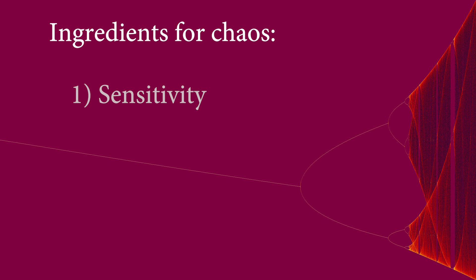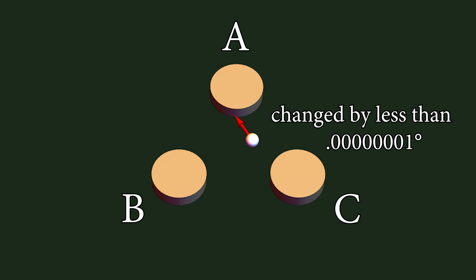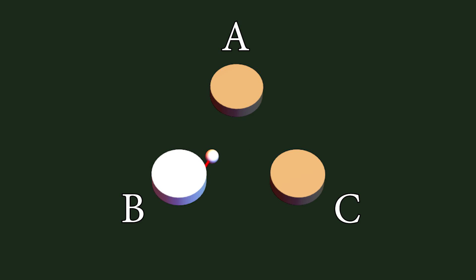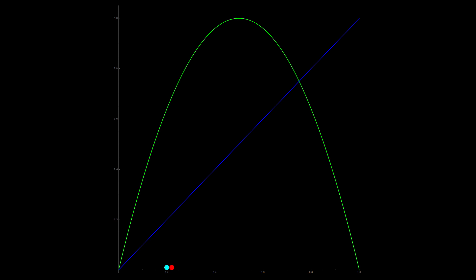The first requirement is an extreme level of sensitivity. Each of the systems I mentioned is extremely sensitive to how and where you start. For example, if you launch a pool ball from one position, labeling the bumpers A, B, and C, you would get a repeating sequence like A, B, C, A, B, C over and over until the ball stopped. Now if you change the angle ever so slightly — a change so small the human eye can't even see it — you get a completely wildly different behavior in which bumpers the ball hits.